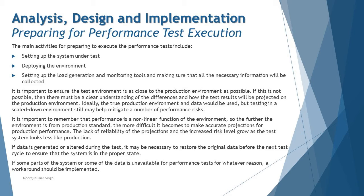It is important to ensure that the environment is as close to the production environment as possible so that you get good, appropriate results. If this is not possible, there must be a clear understanding of the differences and how the test results will be projected onto the production environment. You may talk about scaling your environment and understanding how close it is to production so that ratios can be taken accordingly. Ideally, the true production environment and data will be used, but testing in a scaled-down environment can still help mitigate a number of performance risks.